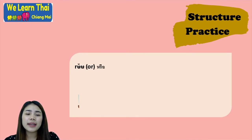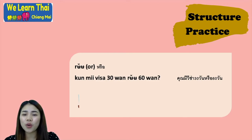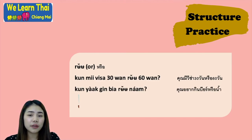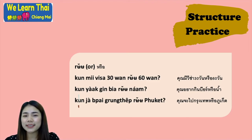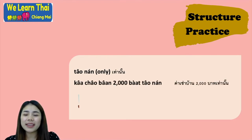Next, let's talk about structure practice. The first one is หรือ, which means or. For example: คุณมีวีซ่า 30 วันหรือ 60 วัน — do you have a 30-day or 60-day visa? คุณอยากกินเบียร์หรือน้ำ — do you want to drink beer or water? คุณจะไปกรุงเทพหรือภูเก็ต — will you go to Bangkok or Phuket?